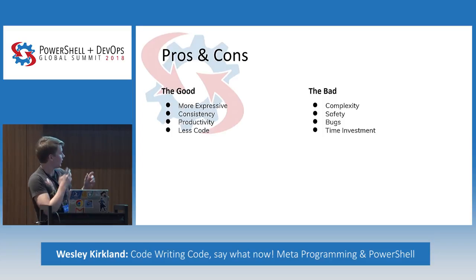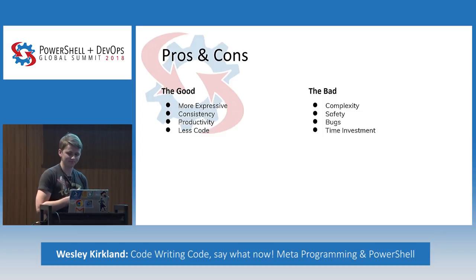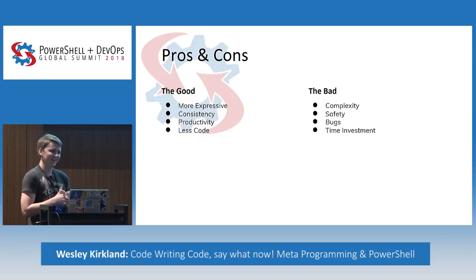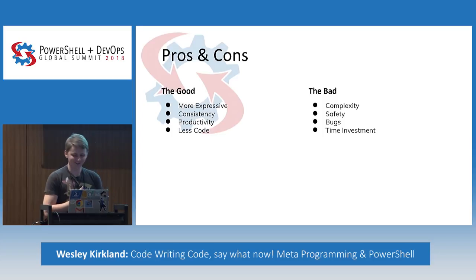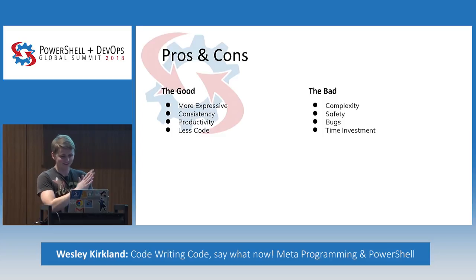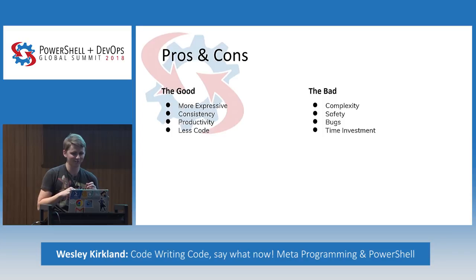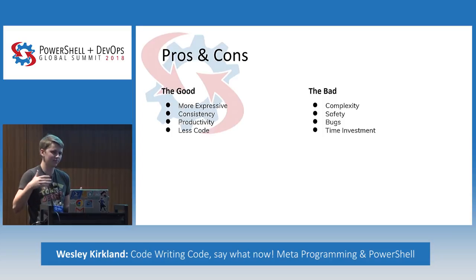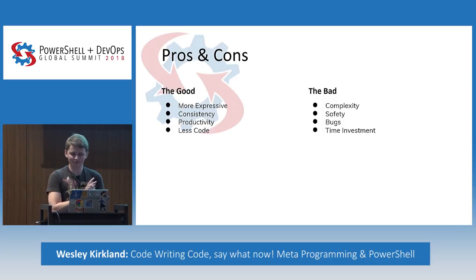I worked with a guy once who somehow didn't believe in variables, and so his code was terrible. He would literally, if he wanted to touch five servers and had ten lines for that, he would just use find and replace to replace the server names. Consistency: with find and replace you're probably going to screw something up. With metaprogramming, we're actually going to make our code very consistent based upon what we're generating.